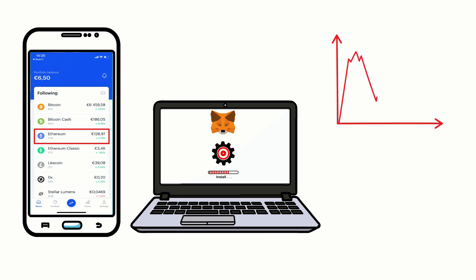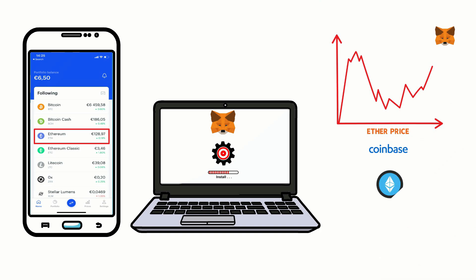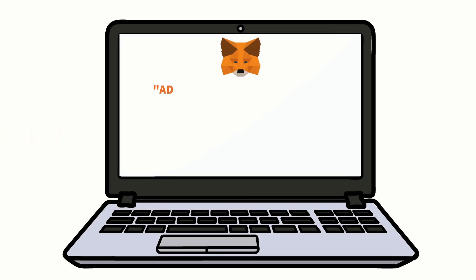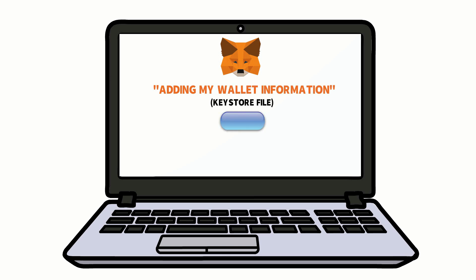There's no need to worry about Ether prices fluctuating while you're using MetaMask, because when you buy Ether through Coinbase, it will always be stored in your wallet. So you can do with it whatever you want — send, spend, or restore it. After installing MetaMask, I had the option of adding my wallet information, keys, or file to make transactions even easier.